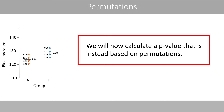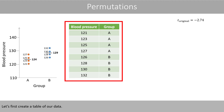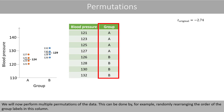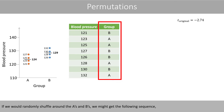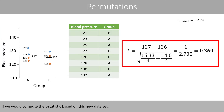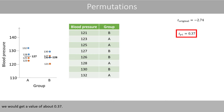We will now calculate the p-value that is instead based on permutations. Let's first create the table of our data, and also place the t-statistic we calculated based on the t-test up here as a reference. We will now perform multiple permutations of the data. This can be done by randomly rearranging the order of the group labels in this column. If we randomly shuffle around the A's and B's, we might get the following sequence, which will generate the following two random groups. If we compute the t-statistic based on this new data set, we get the value of about 0.37.